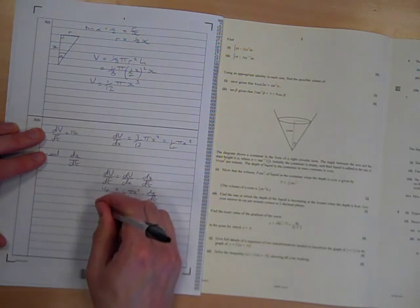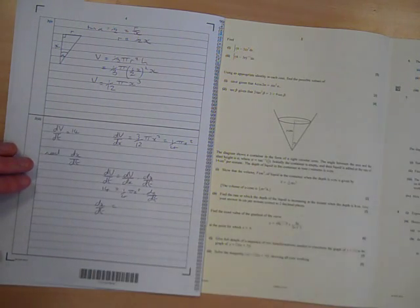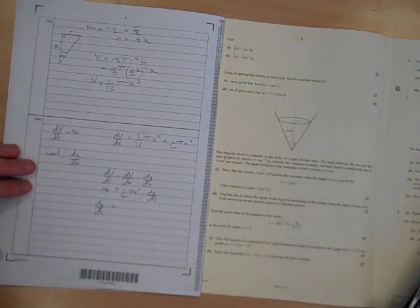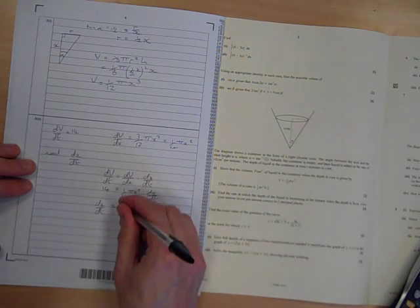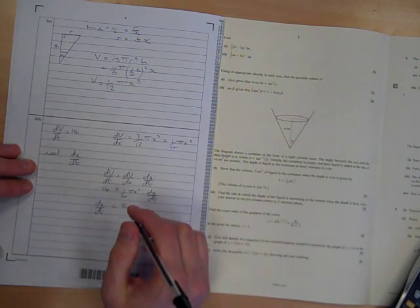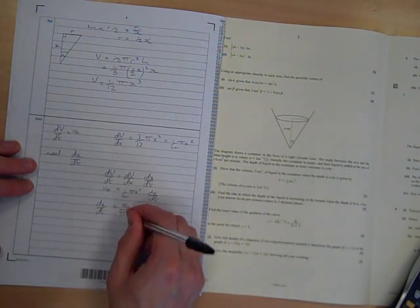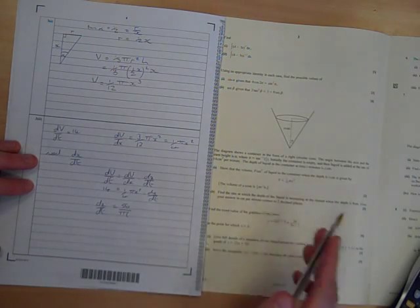So dx by dt is, if we rearrange that, that is 4 times 14, 56. Hang on, I don't mean that, do I? Yeah, I do. Yeah, 56 over pi times 8 squared, because we're doing it when the depth is 8.